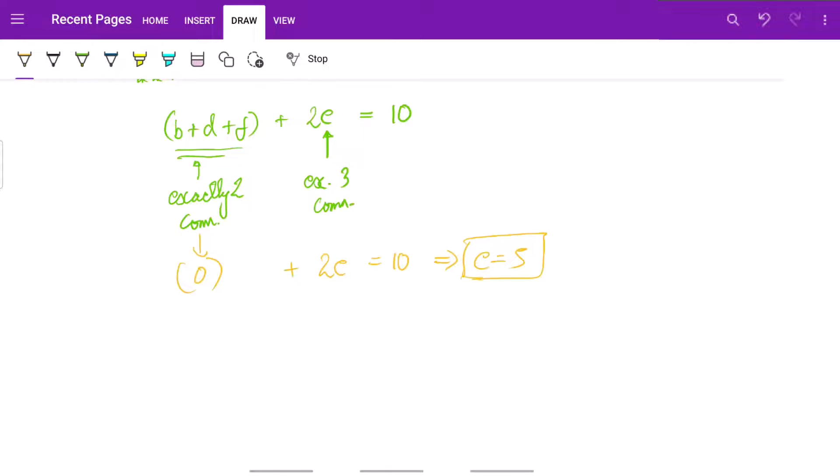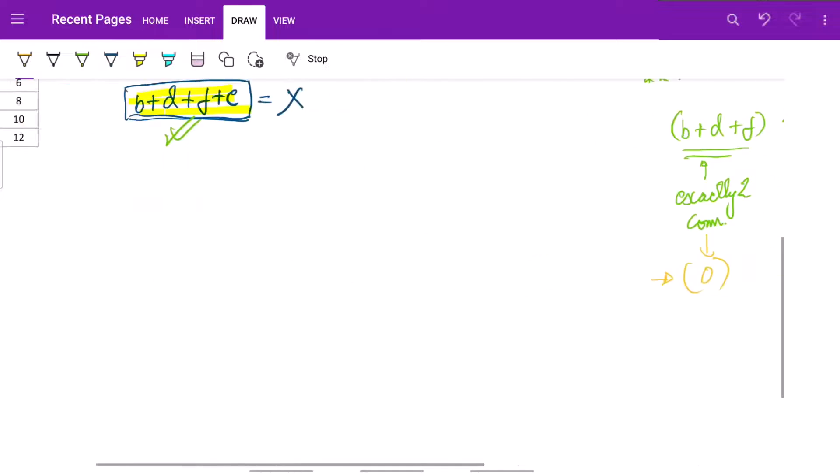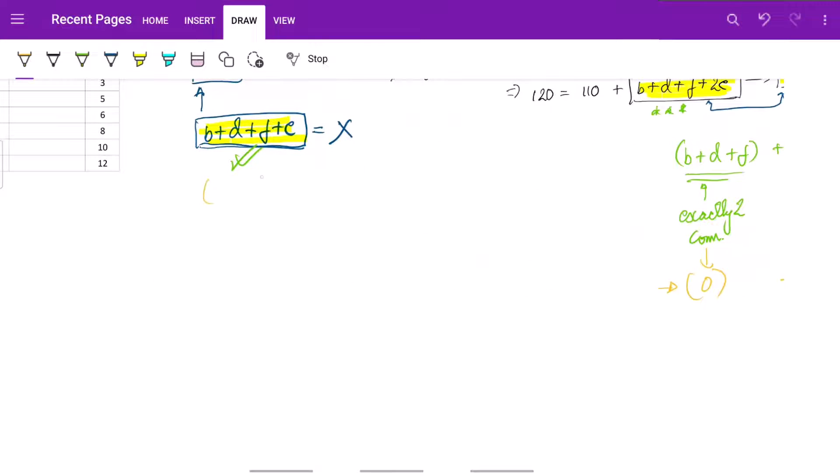So we can put this value here, b plus d plus f as 0 and e equals 5 here. This gives the x minimum value.